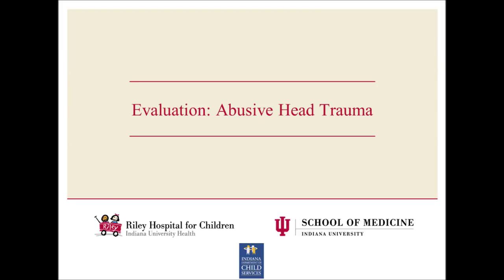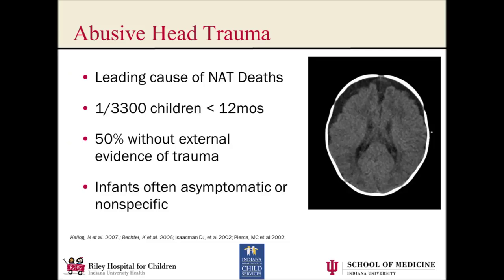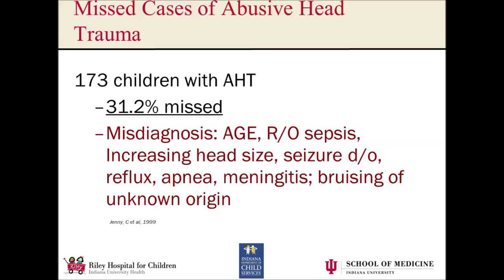Let's talk about abusive head trauma. Head injury is the leading cause of death from inflicted trauma and is estimated to occur in as many as 1 in 3,300 kids under a year of age — making it more common than cancer in this age group. More than 50% have no external evidence of trauma, and many are asymptomatic or have nonspecific symptoms like increased fussiness, not sleeping well, or some vomiting. In studies looking at abusive head trauma that we've missed, we miss it about 31% of the time, and the diagnoses we give these kids include things like meningitis, bruising of unknown origin, increasing head size, and seizure disorder.